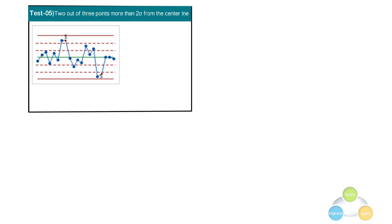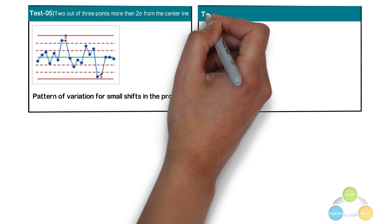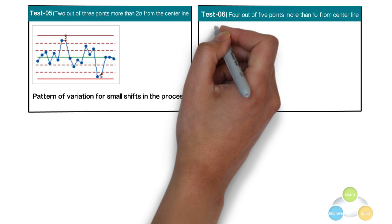Test 5: 2 out of 3 points more than 2 sigma from the center line on the same side. Test 5 evaluates the pattern of variation for small shifts in the process. Test 6: 4 out of 5 points more than 1 sigma from the center line on the same side. Test 6 evaluates the pattern of variation for small shifts in the process.